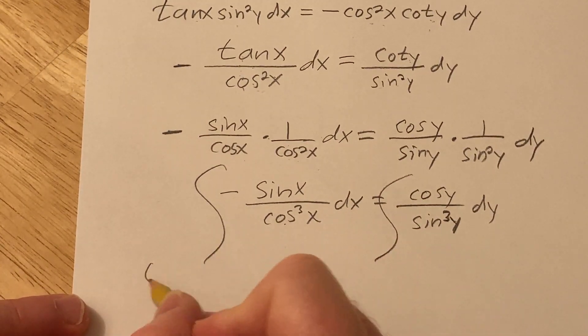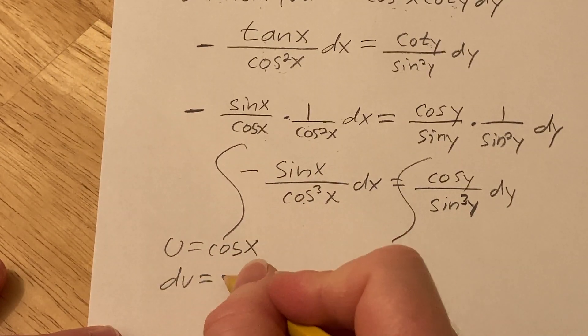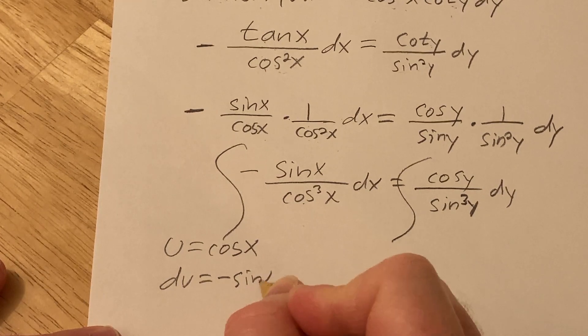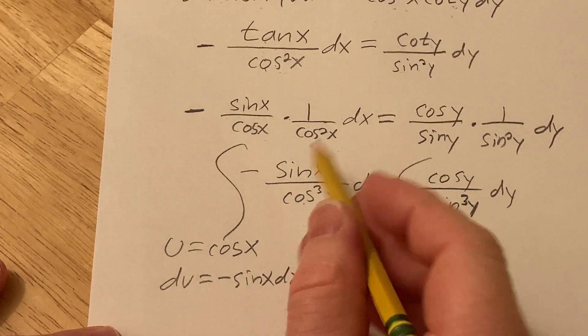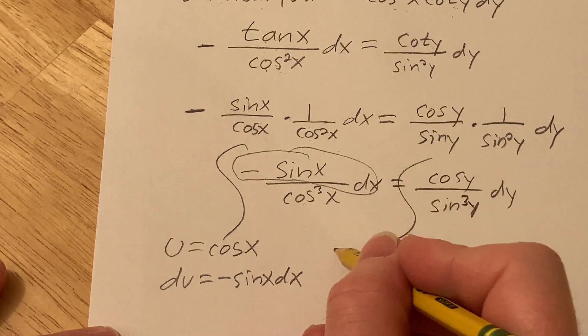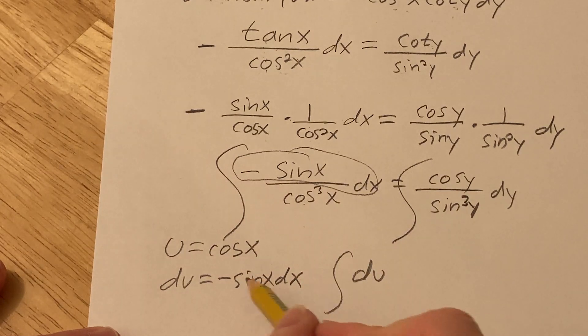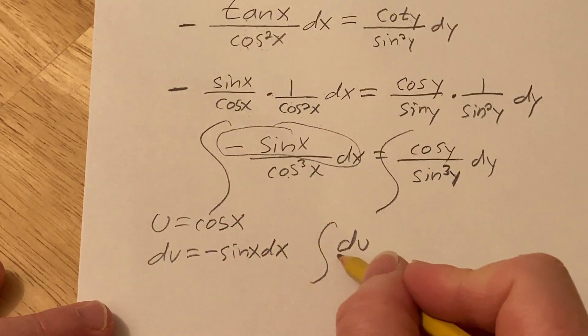So here we'll let u be cosine, and then so du is going to be the derivative, which is negative sine x dx. Beautiful, right? And that's all right there, look at that, worked out perfectly. So that's going to be, this integral here will become du, right, because that whole piece is du, and then the bottom is u cubed.